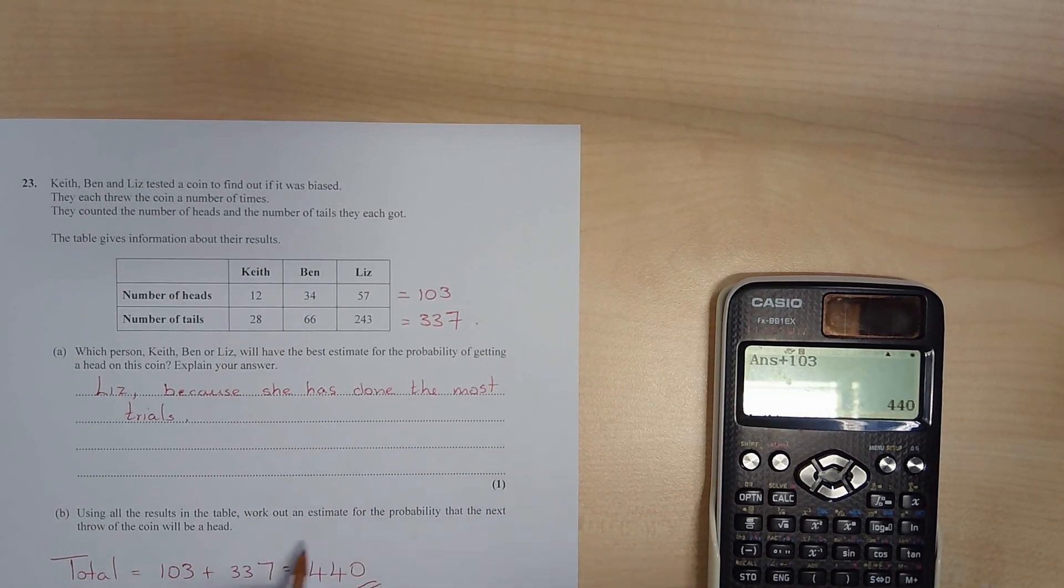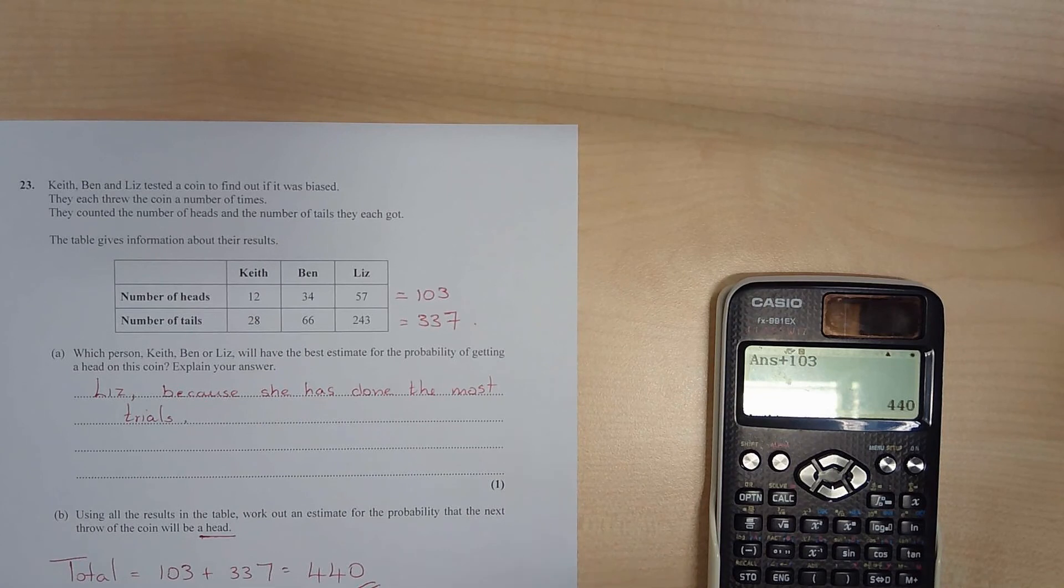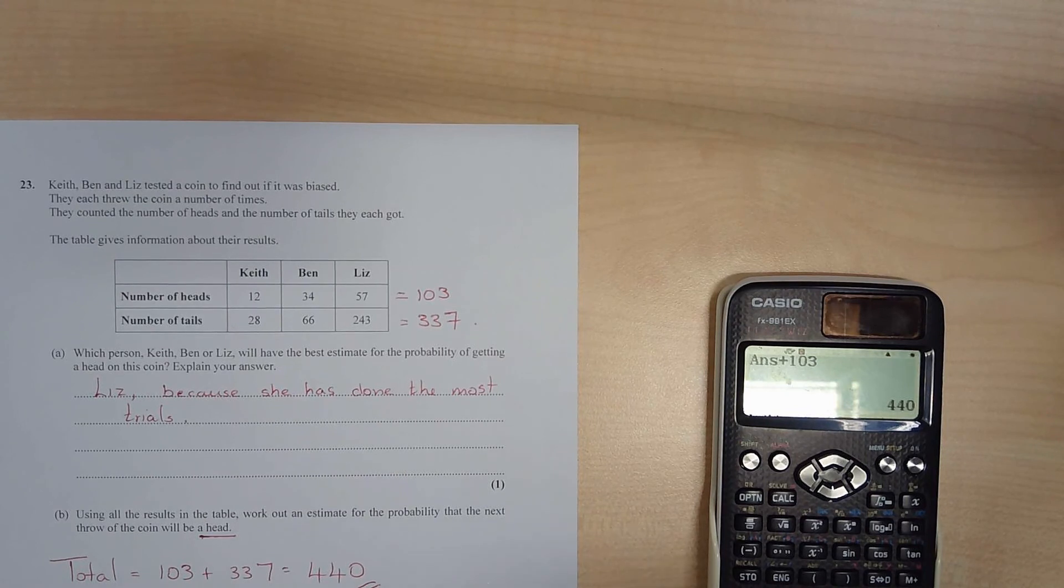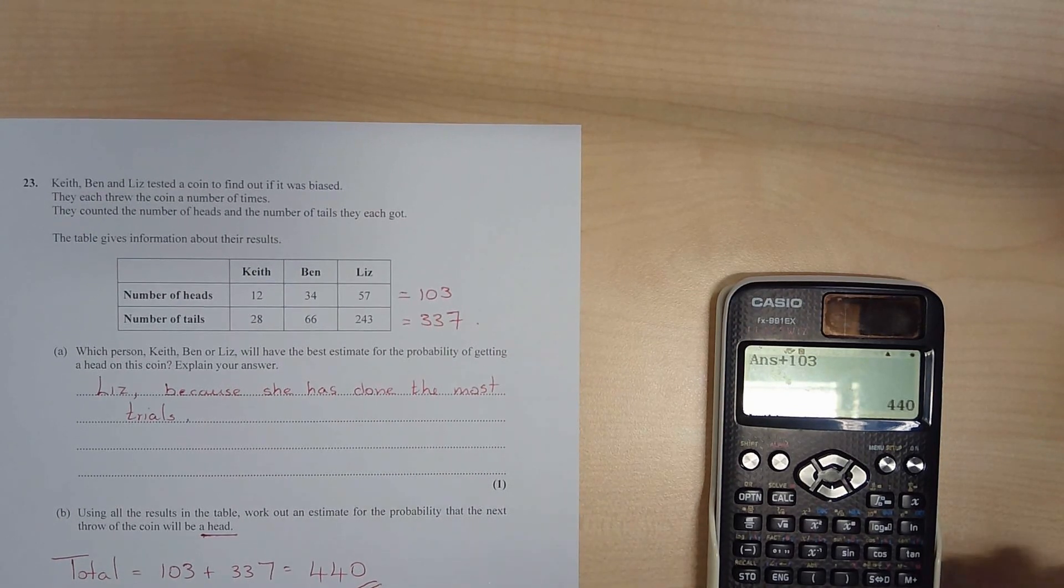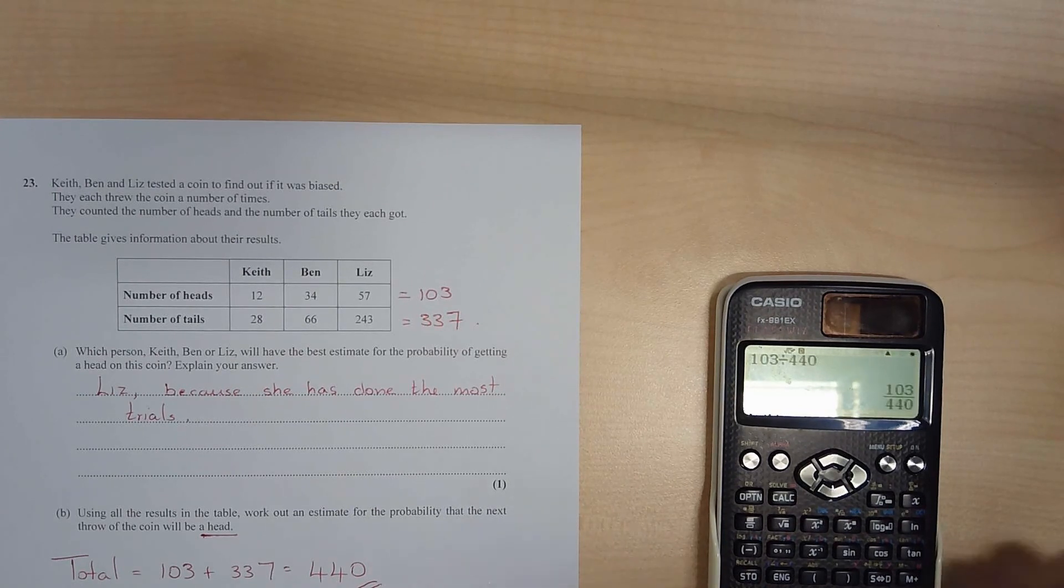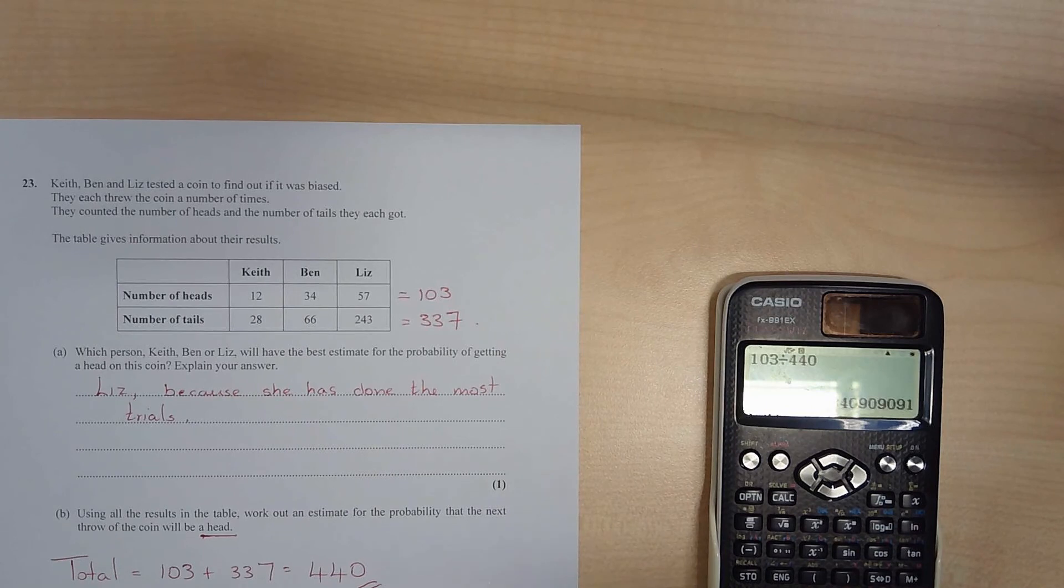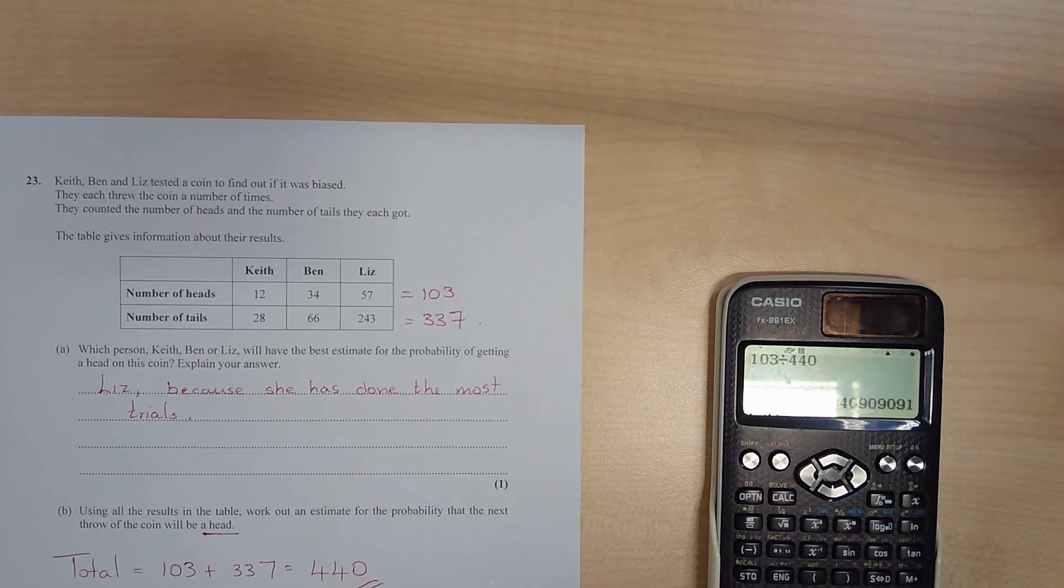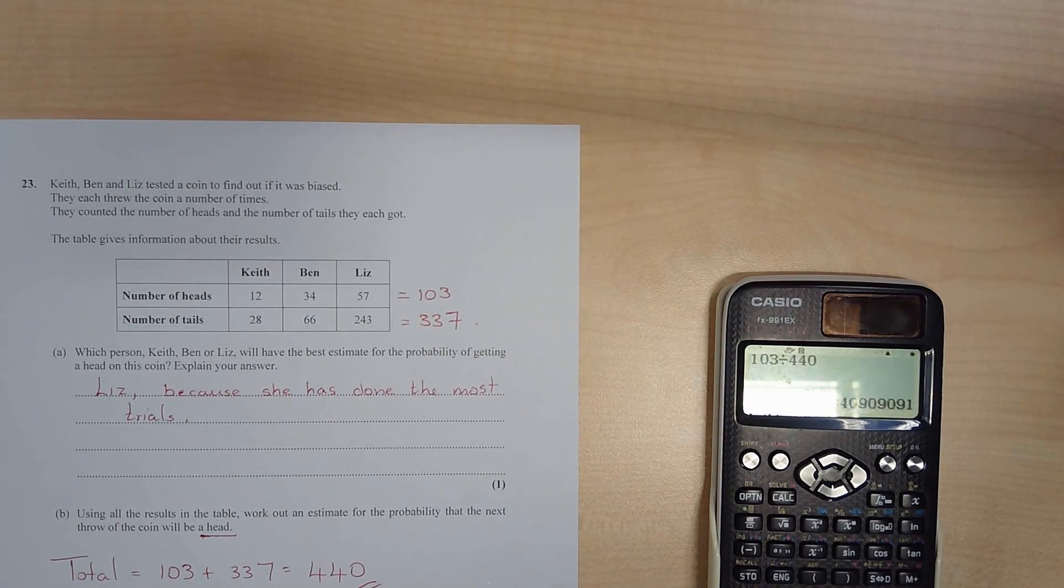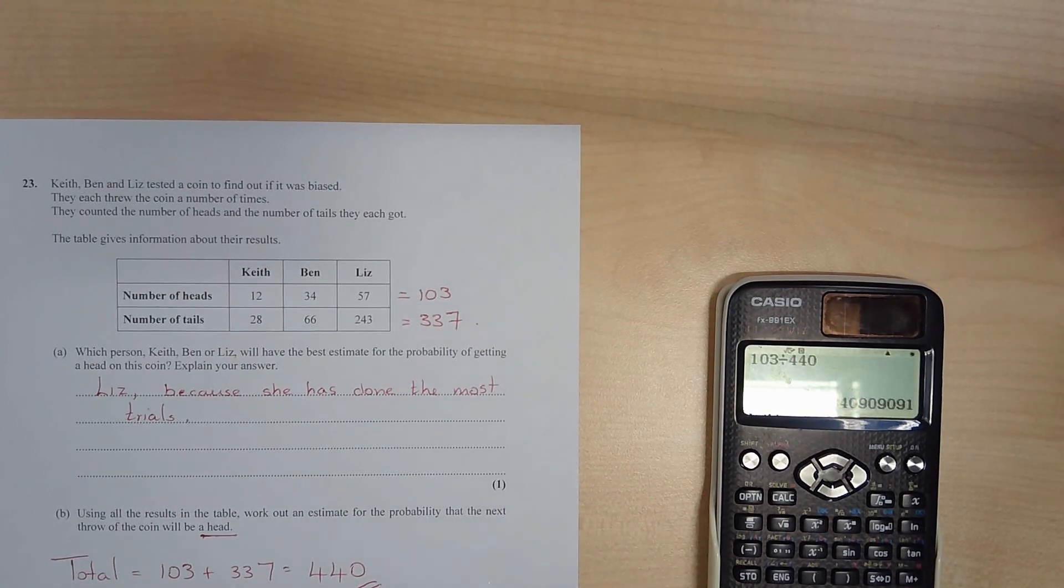And we want the probability of heads, so it's going to be heads will be 103 out of 440, or we could put that as 0.23, and I've rounded that. Okay, so I think we best stick with our fraction.